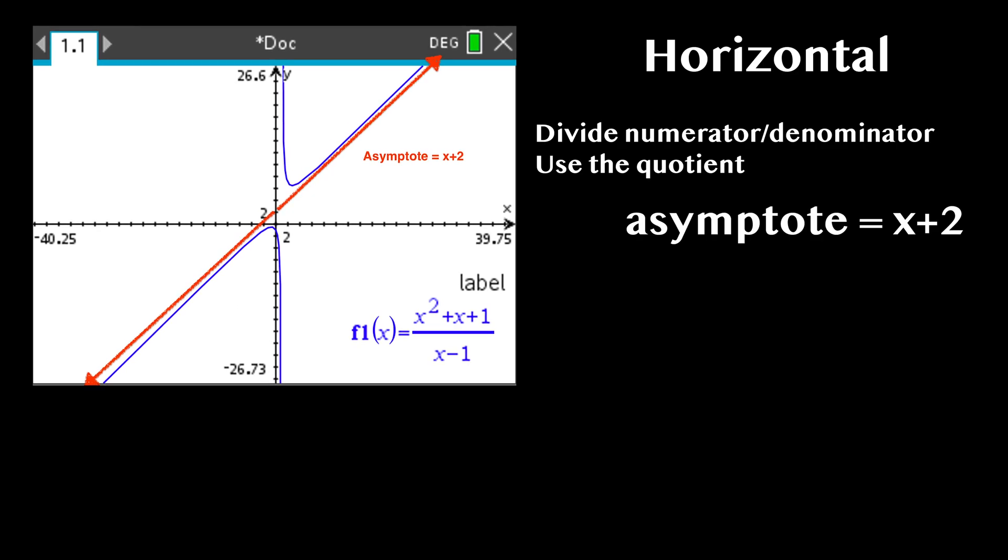To find the oblique or slant asymptote, you must divide the numerator by the denominator, by either using long division or synthetic division, and use the quotient as the slant asymptote.